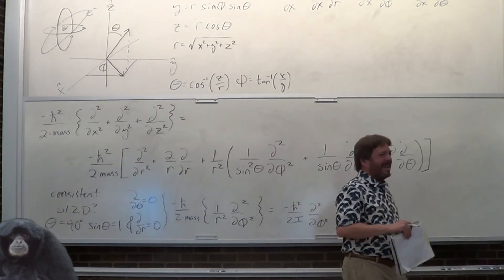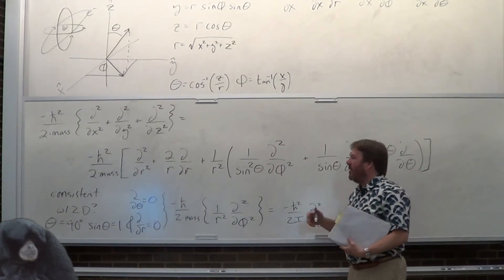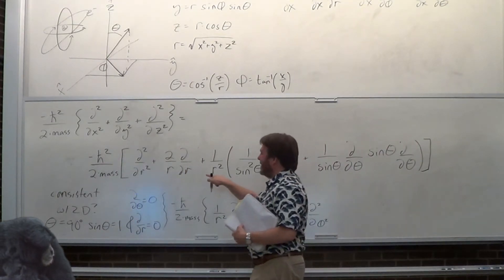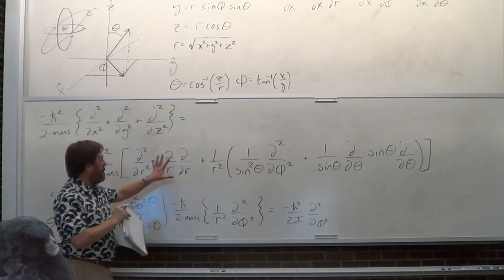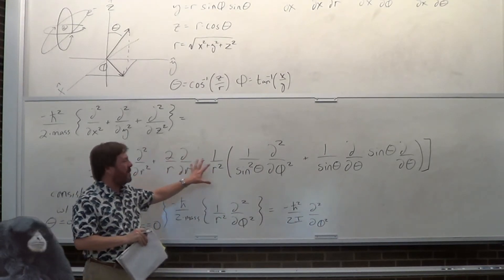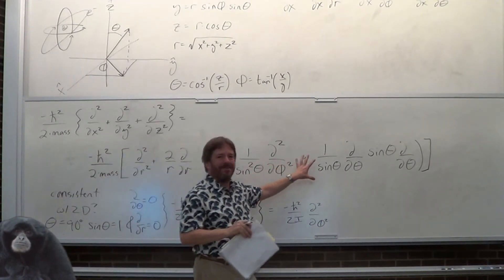So, 2D — not too bad. For 3D, the best I can do is wipe out these two radial terms, but the rest remain.